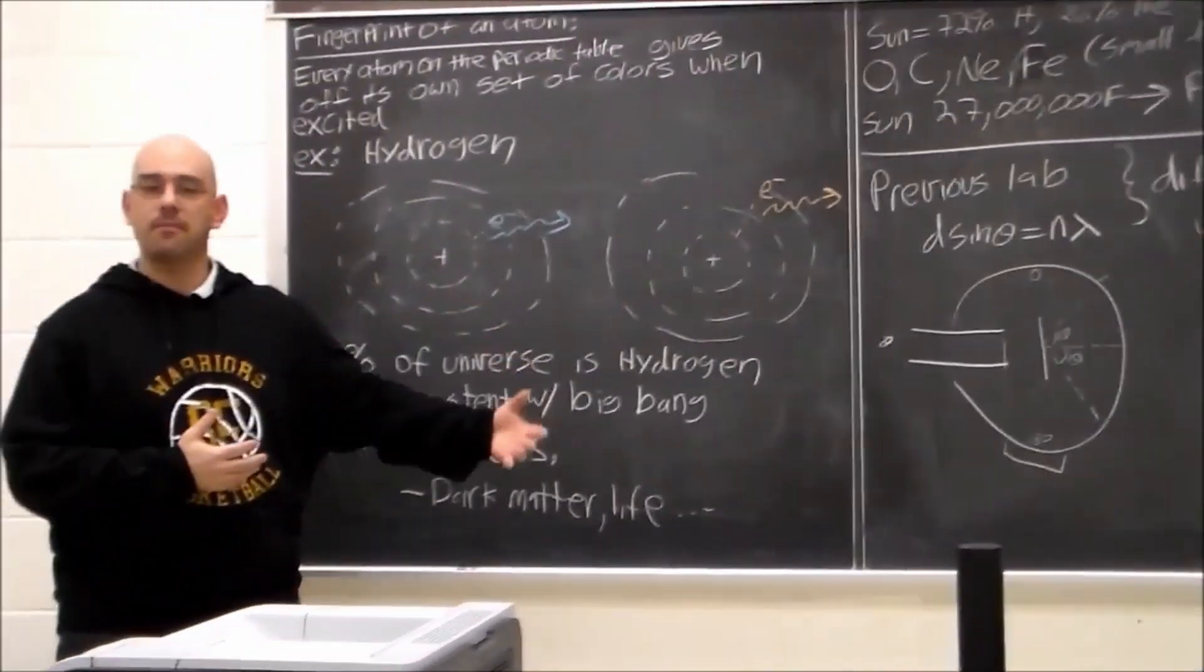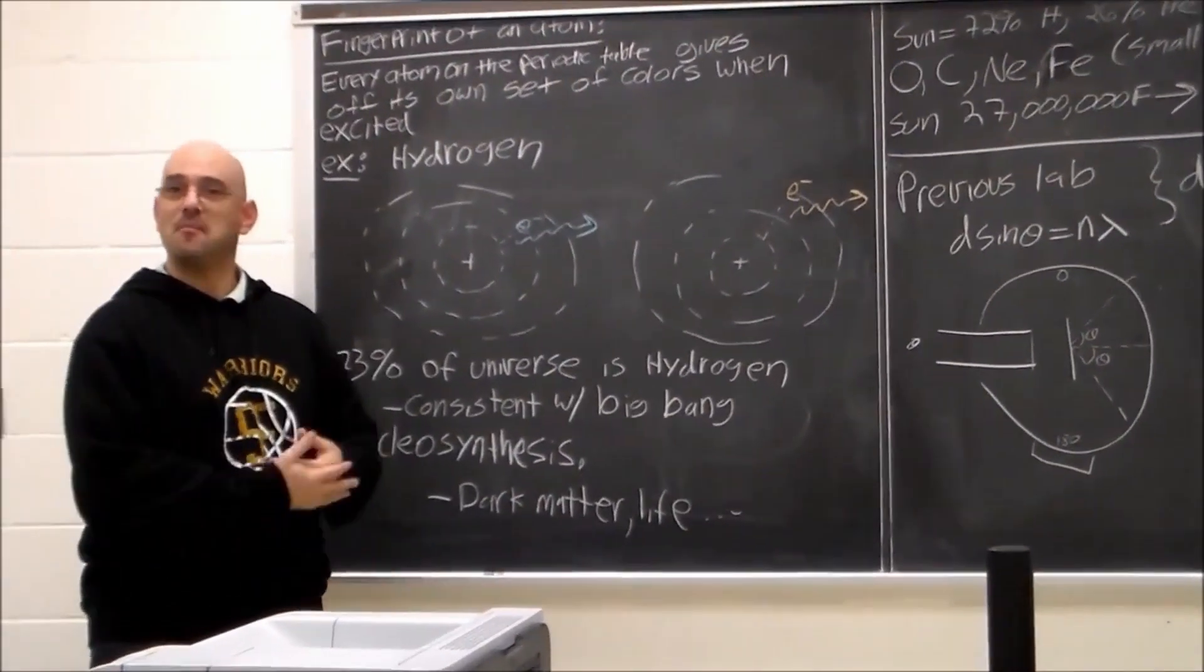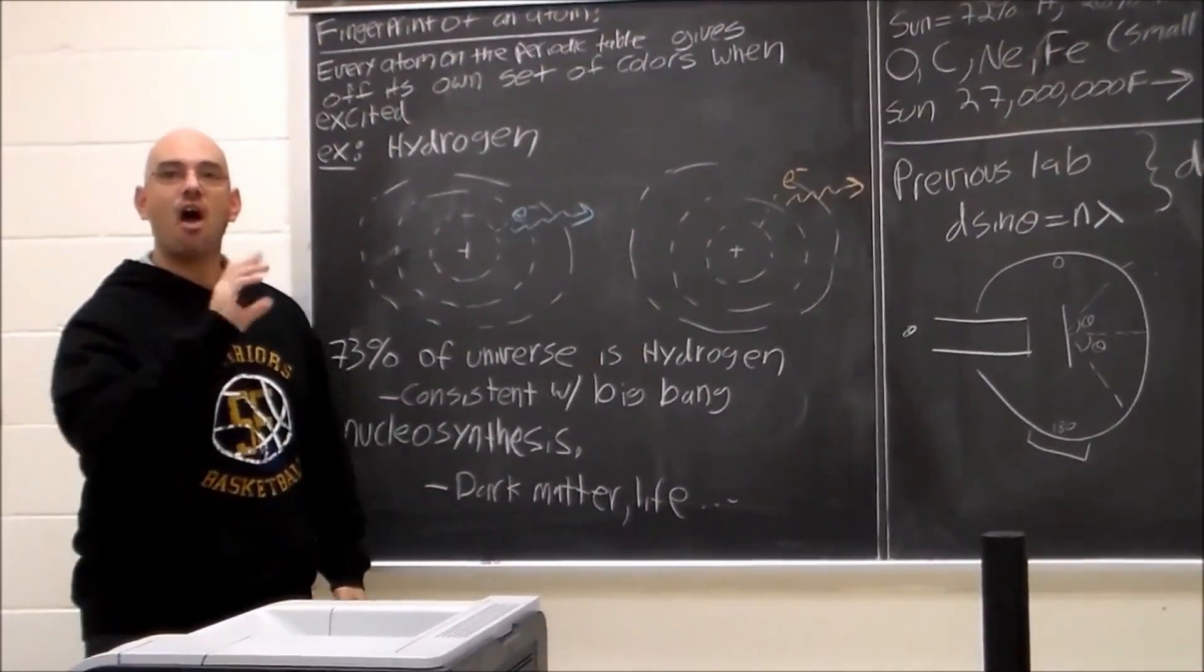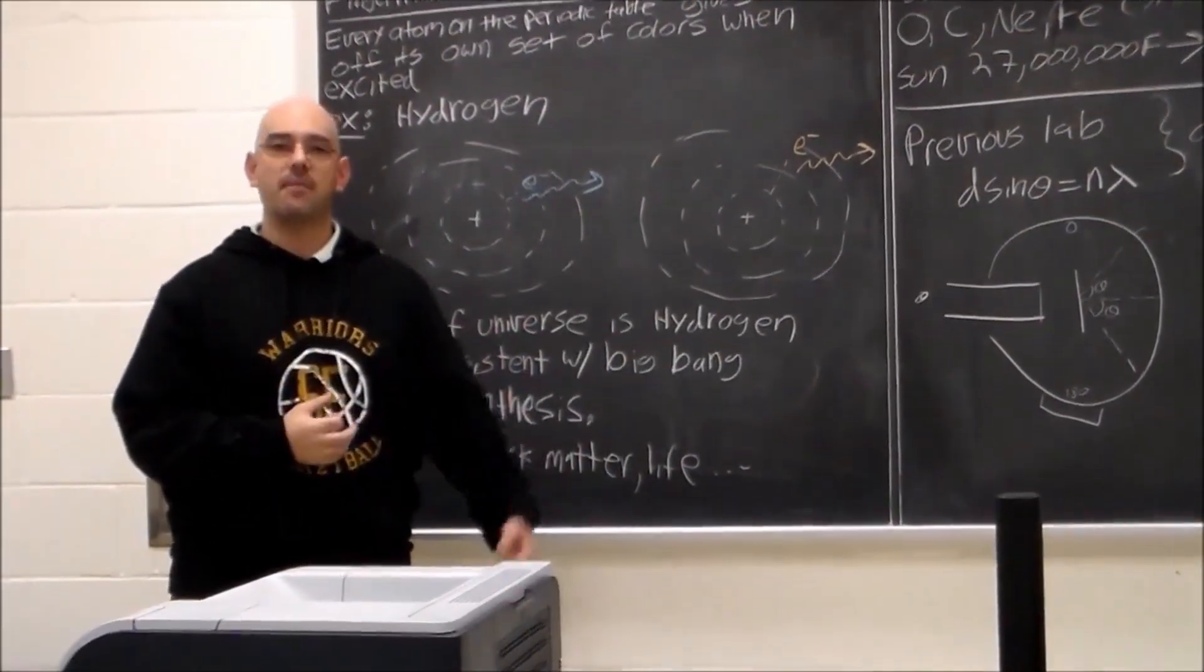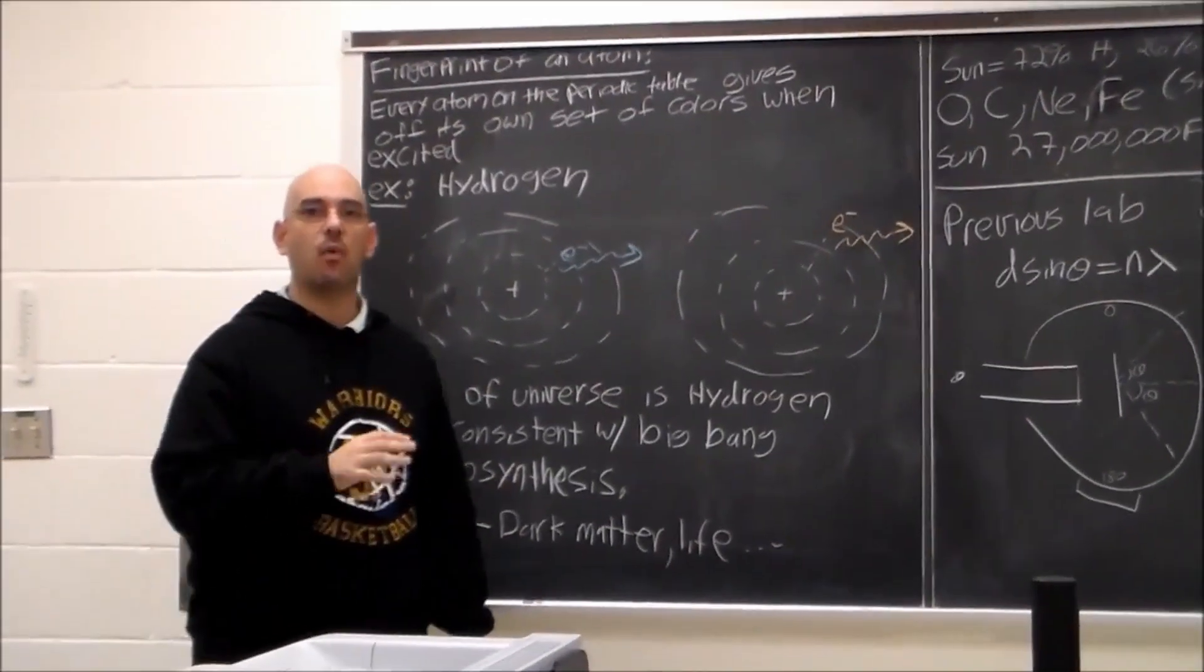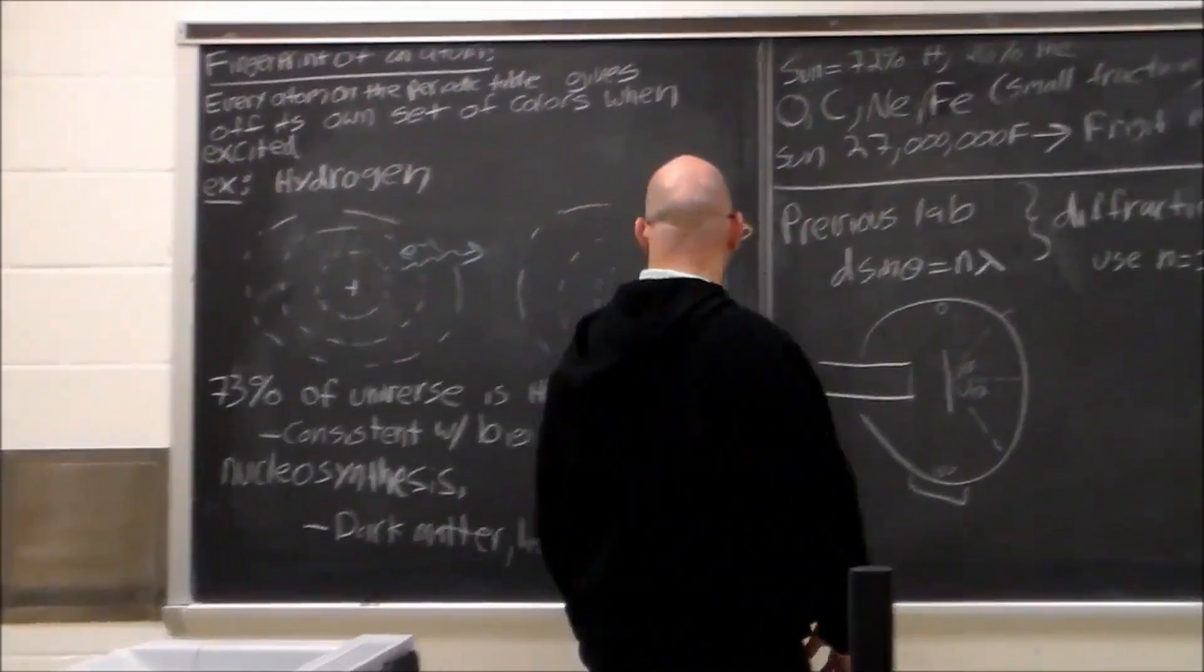If you had a different atom, for example, lithium or oxygen or neon, they all have their own set of colors that they give off and so every atom is unique in that way and that's how you can tell one atom from another. And that's what we're going to be discussing in this lab.